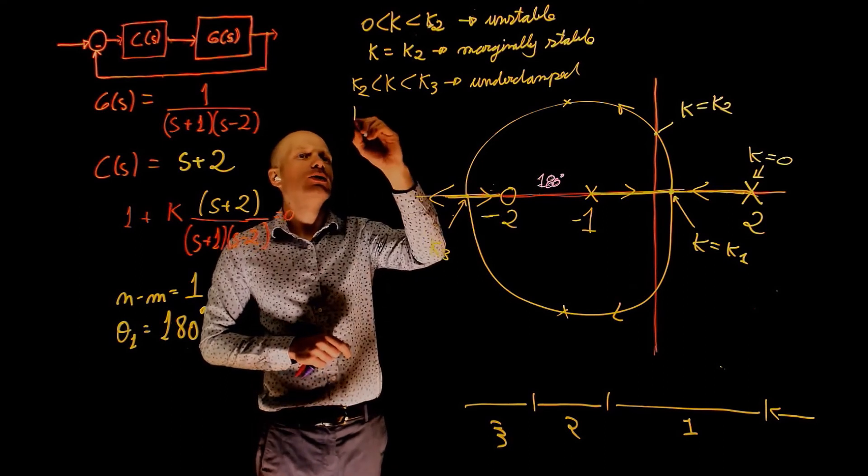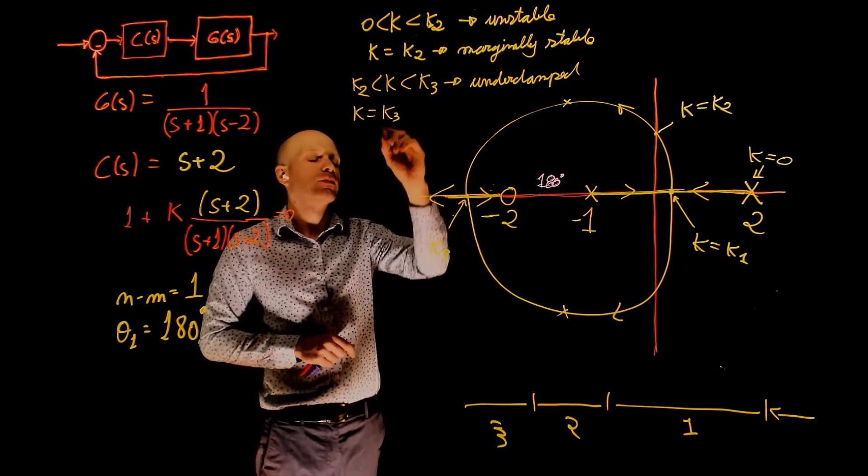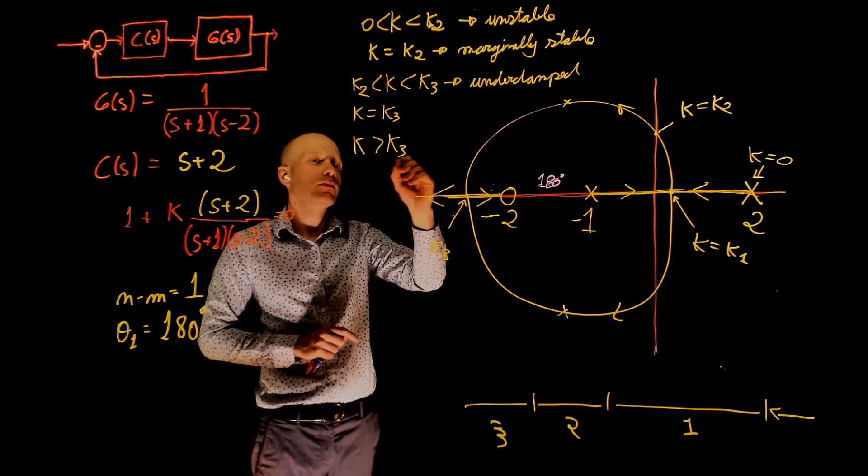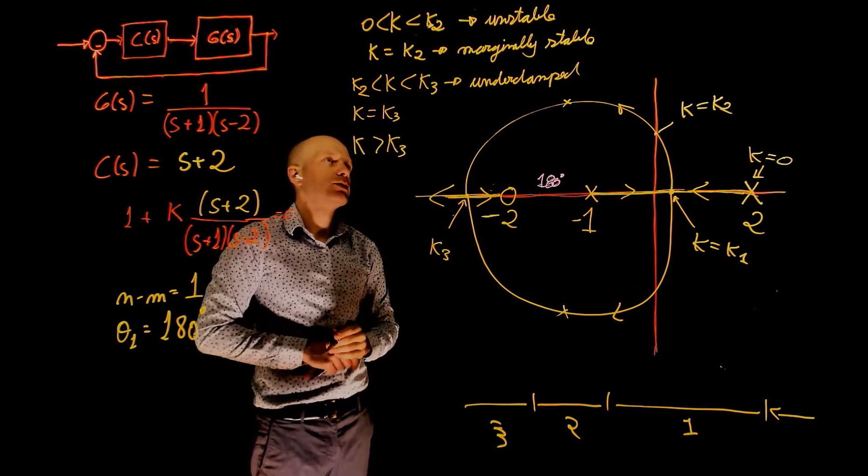When K equals to K3, this is a critically damped system. And for K greater than K3, the system becomes overdamped.